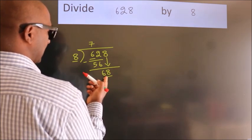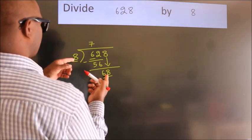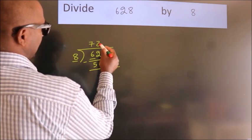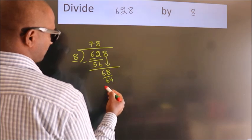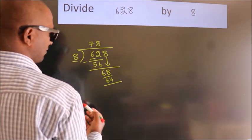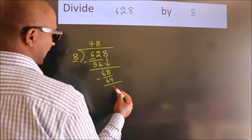A number close to 68 in the 8 table is 8 times 8 equals 64. Now we subtract. We get 4.